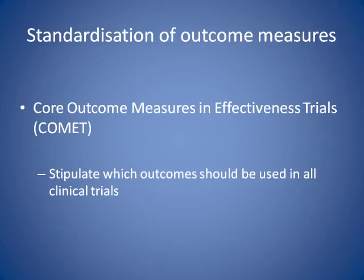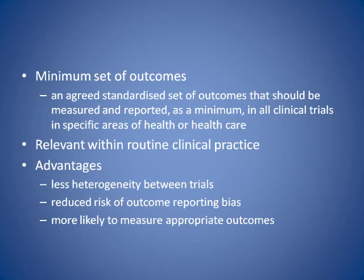One new initiative for overcoming selective outcome reporting is COMET — Core Outcome Measures in Effectiveness Trials — being undertaken by Paula Williamson in Liverpool. It stipulates which outcomes should be used in clinical trials, setting out a minimum set of outcomes, with a database of minimum outcomes that should be reported in different healthcare settings. The advantages are less heterogeneity between trials, reduced risk of outcome reporting bias, and potentially the use of more appropriate outcome measures.